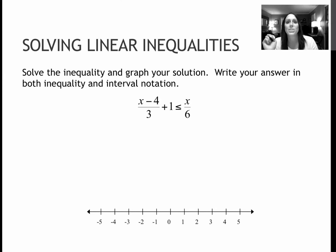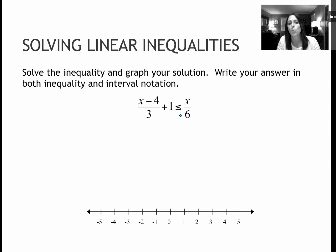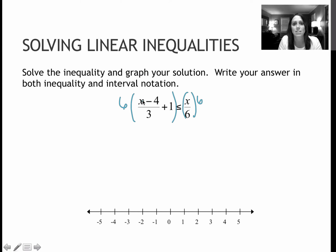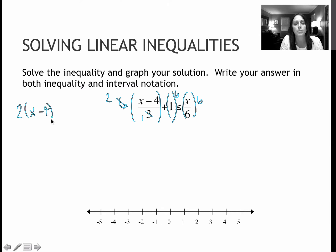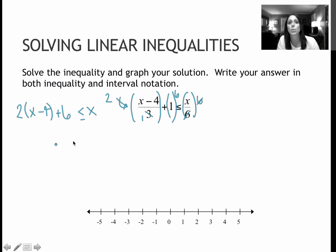This one is where we're going to use that trick for clearing fractions. Looking at denominators of 3 and 6, the smallest number that both go into is 6. So I'm going to multiply everything by 6. This one reduces: 6 divided by 3 is 2, giving me 2 times (x minus 4). Then 1 times 6 is 6, and the 6's cancel to give me x. Now I'll distribute: 2x minus 8, plus 6, less than or equal to x.